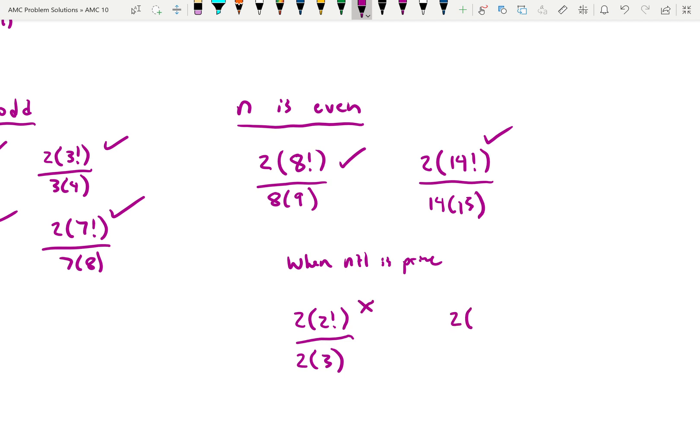And again, you'll see that, like, here, n is 4. Bottom's going to be 4 times 5. Nothing, like, when n plus 1 is prime, nothing in the numerator is going to be divisible by that prime number. So actually, in all cases when n plus 1 is prime, it's not going to be evenly divisible.